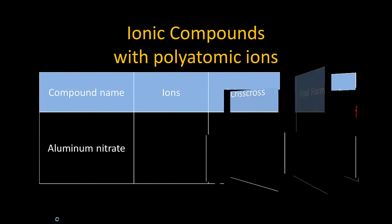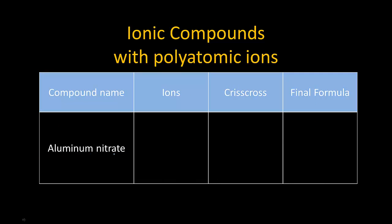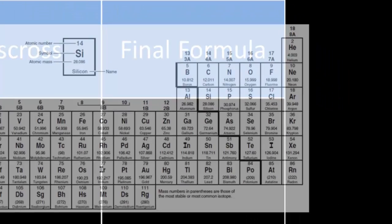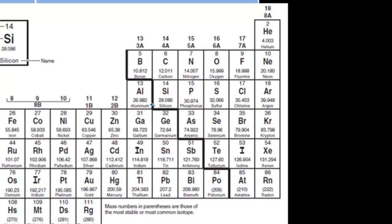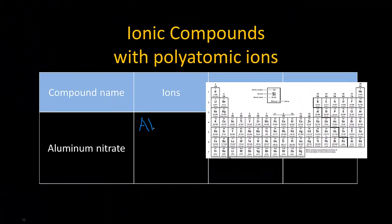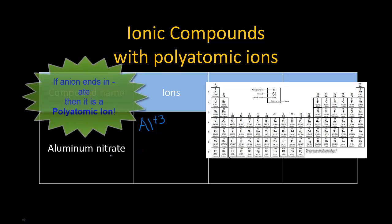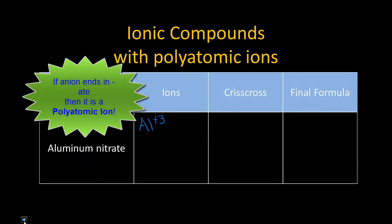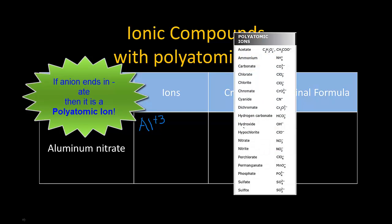First example: aluminum nitrate. Let's look at our ions. Aluminum is in group 13 — it has three valence electrons. It is much easier to lose three than gain five, so its charge or oxidation number is plus three. Nitrate ends in -ATE, which is a big indicator that you will not find it on the periodic table — you're going to find it on your reference sheet under polyatomic ions.